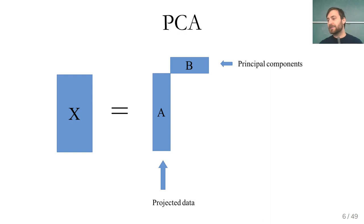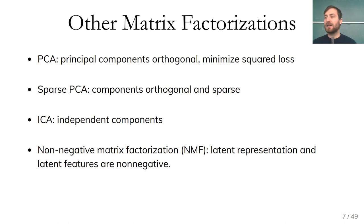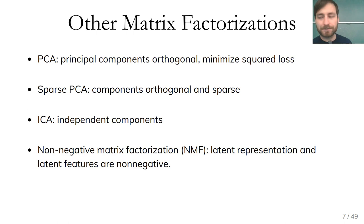What PCA does is restrict the components — the columns in B — to be orthogonal, and it tries to optimize the reconstruction error, minimizing AB minus X in the squared loss. This completely defines PCA. But there are many other requirements you could make of A and B. PCA has orthogonal components and minimizes squared loss. There's also sparse PCA where you want the components to be sparse and orthogonal, or possibly you want the latent representation to be sparse.